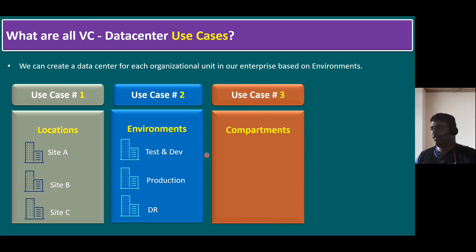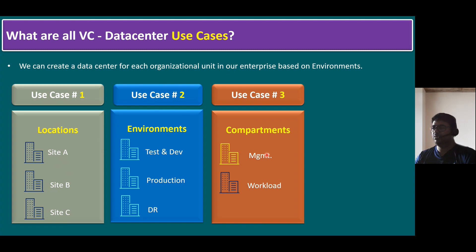Use case three is dividing based on compartments. One data center is specifically for the management compartment and another for the workload compartment. Management means all infrastructure VMs like Active Directory, DNS, DHCP, vCenter server, SFTP servers, file servers, and monitoring servers. Workload means all customer-specific business or project-related application services — these come under the workload data center.